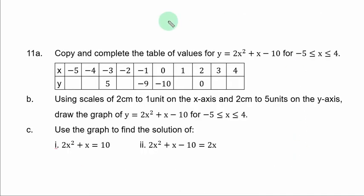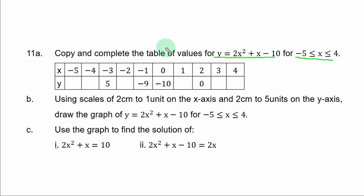Question 11a. Copy and complete the table of values for y = 2x² + x - 10, for -5 ≤ x ≤ 4. You have the x-values from -5 to 4 with some missing y-values. Get 2x² (x squared times 2), x remains the same, and -10 is a constant appearing for each x value.